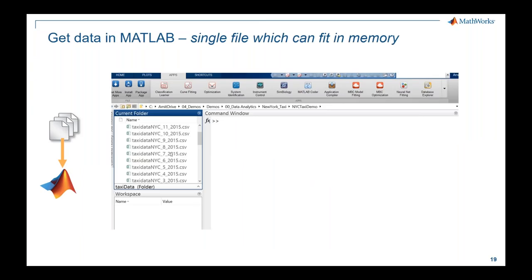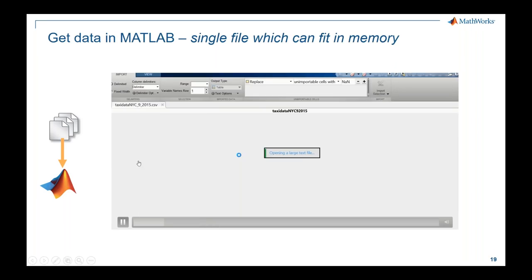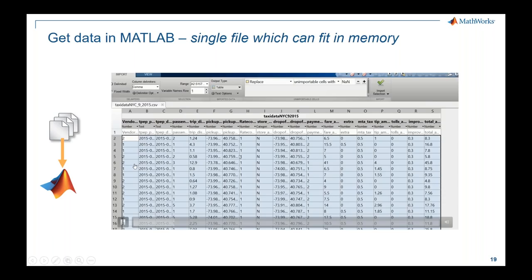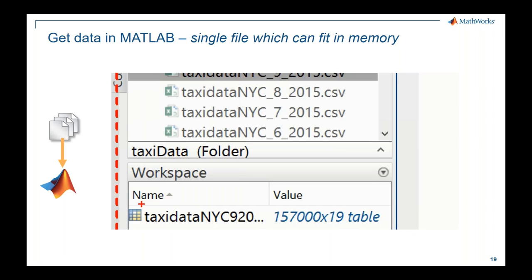Once data is available in MATLAB, for a single file it's just drag and drop. It gives you access to all columns and observations. You can check for missing data or unimportable cells and convert those during import itself — it's better to clean while importing rather than after. After clicking import, you'll see in the workspace that the taxi data has 157,000 observations.